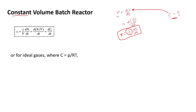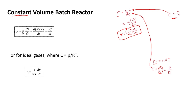Suppose you have a gaseous species and you want the rate expression in terms of pressure. From the ideal gas equation pv = nRT, you can write n/v = p/RT, and n/v is actually the concentration. Now, if you substitute this concentration expression into the original rate expression, you get r = dc/dt with c replaced by p/RT.